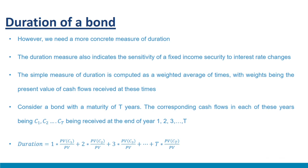We need a more concrete measure of duration. The duration measure also indicates the sensitivity of a fixed income security to interest rate changes. The simple measure of duration is computed as a weighted average of times, with weights being the present value of cash flows received at those times. For a bond with maturity T years and cash flows C1, C2, ..., CT: Duration = 1×(PV(C1)/PV) + 2×(PV(C2)/PV) + ... + T×(PV(CT)/PV).